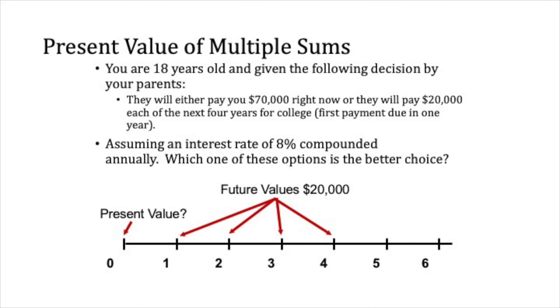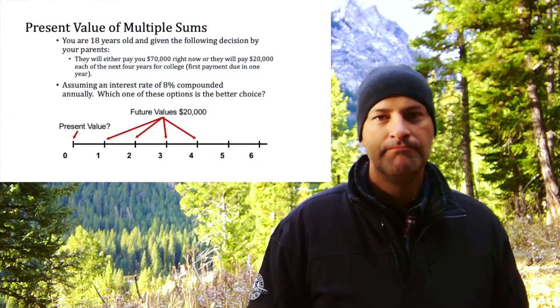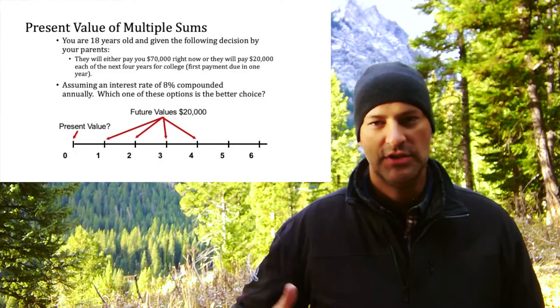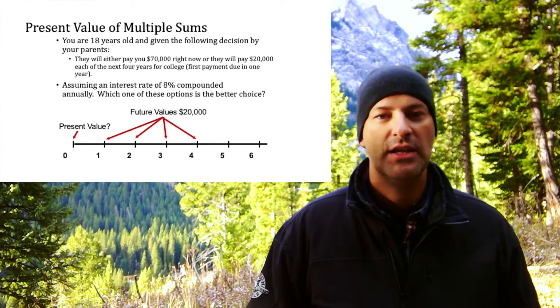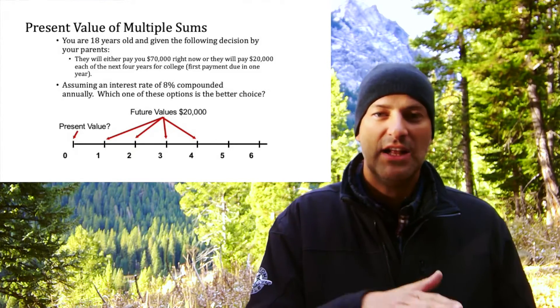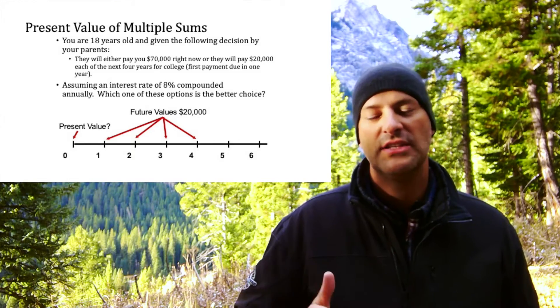So that is basically the calculation for working through a present value problem. If we have a present value with multiple sums — what we'll call an annuity — here's a problem: you're 18 years old, and your parents offer you the following decision: they will either pay $70,000 right now, or they will give you $20,000 at the end of each of the next four years for college. That's our question: $70,000 now or $20,000 at the end of each of the next four years.